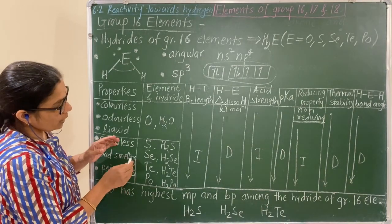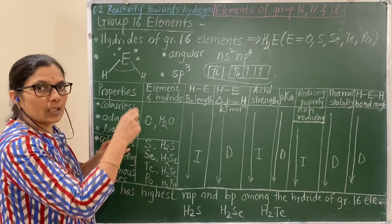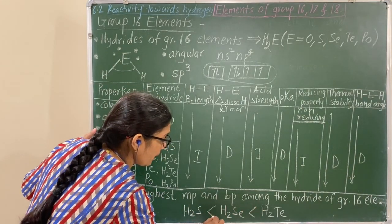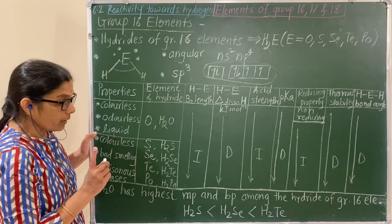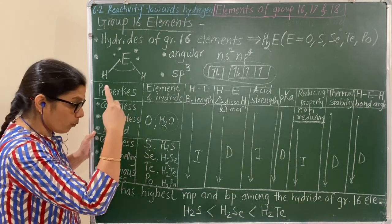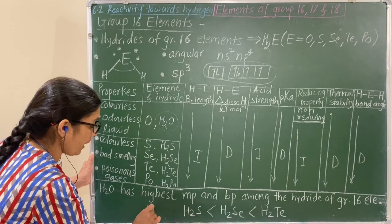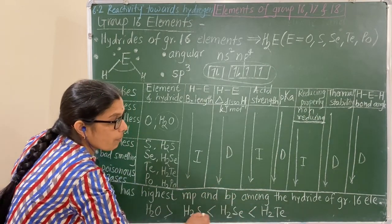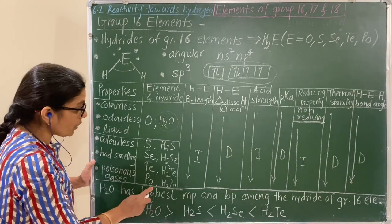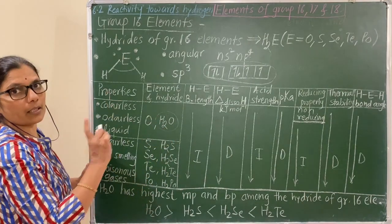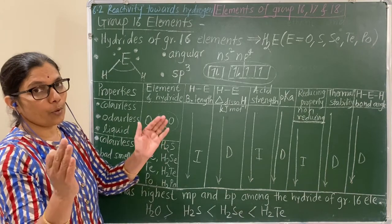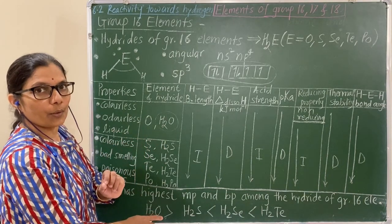Melting point and boiling point: in general, as size increases down a group, molar mass increases and van der Waals forces of attraction increase, so melting and boiling points increase. However, water has an abnormally high melting and boiling point — the highest among all group 16 hydrides — due to the formation of intermolecular hydrogen bonding. Oxygen is highly electronegative, enabling this strong hydrogen bonding.